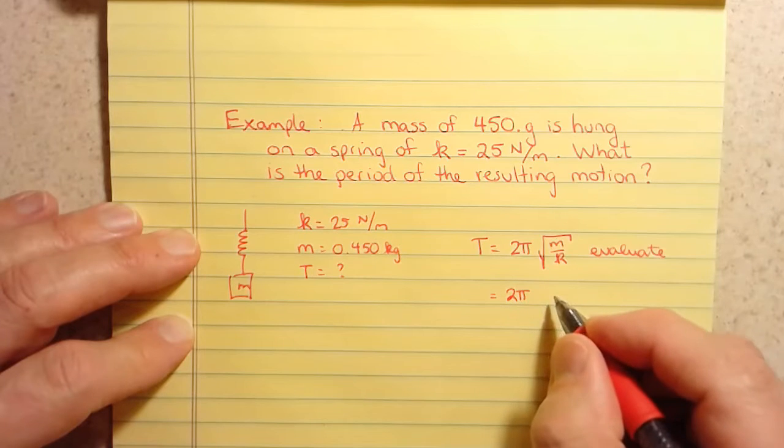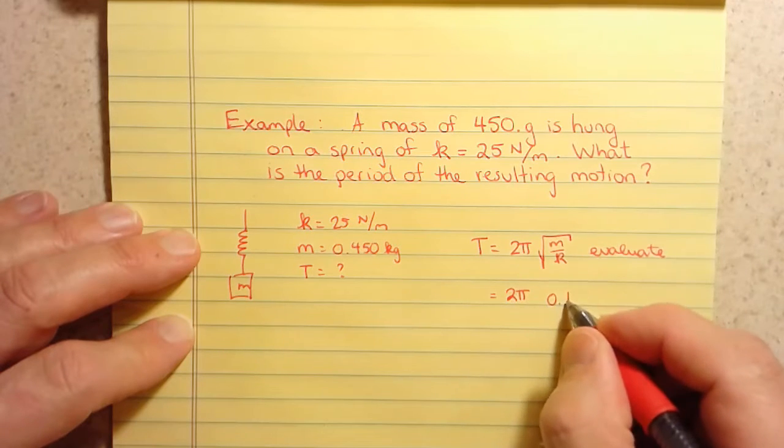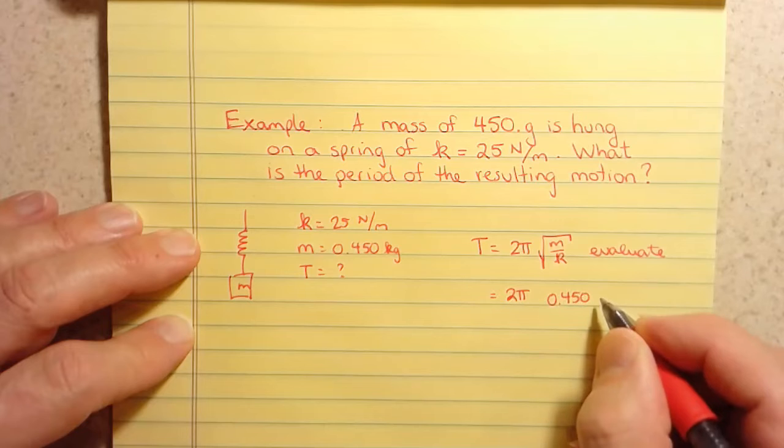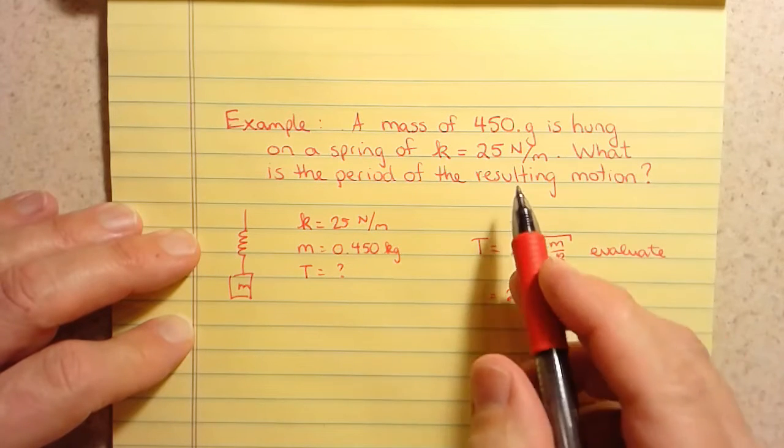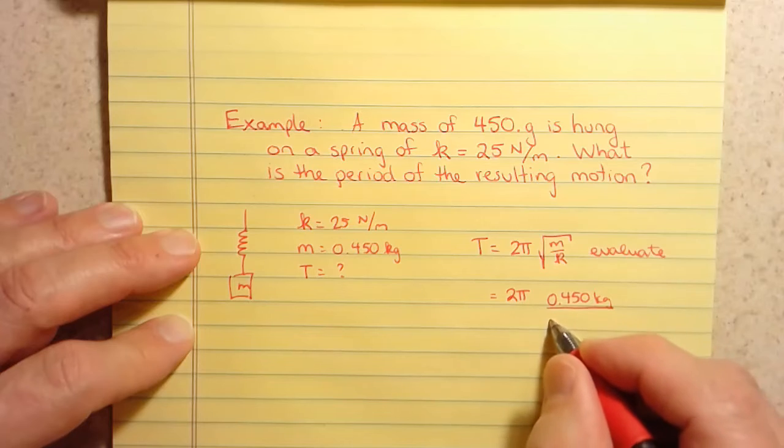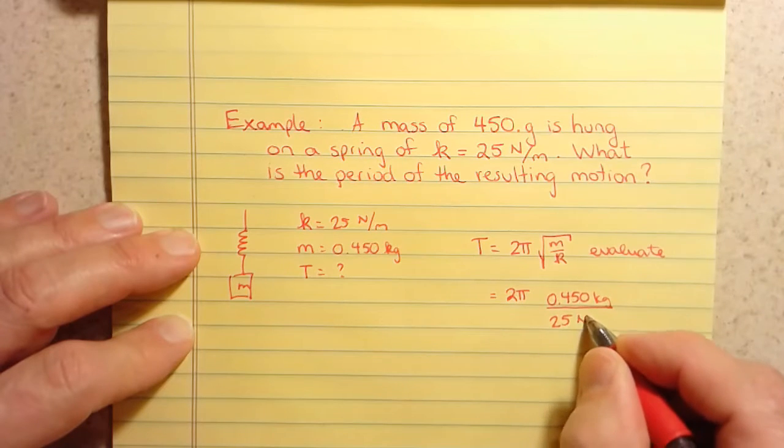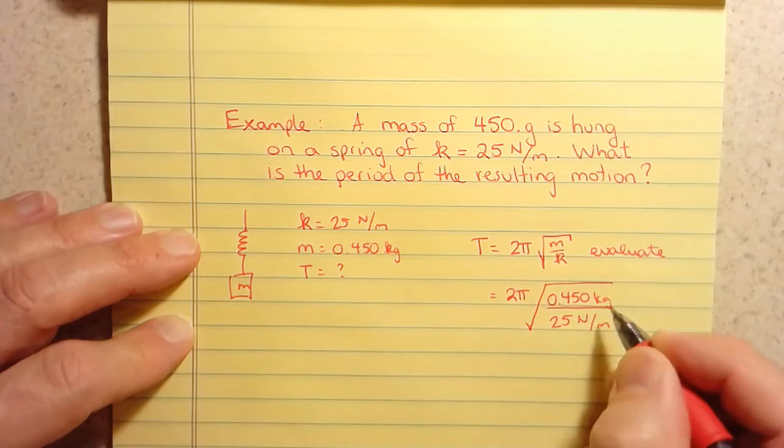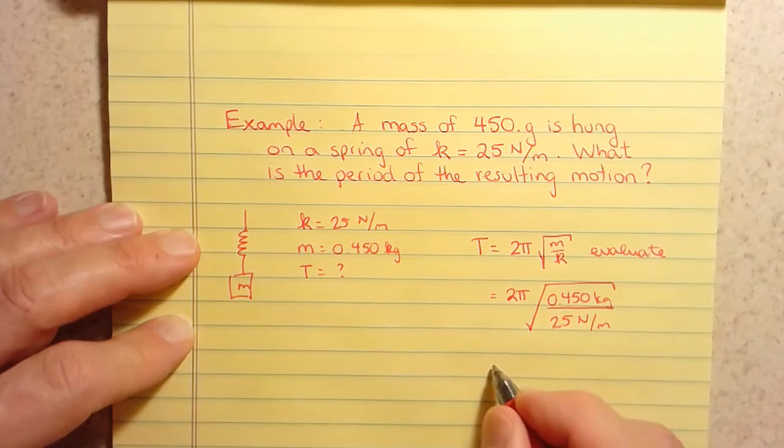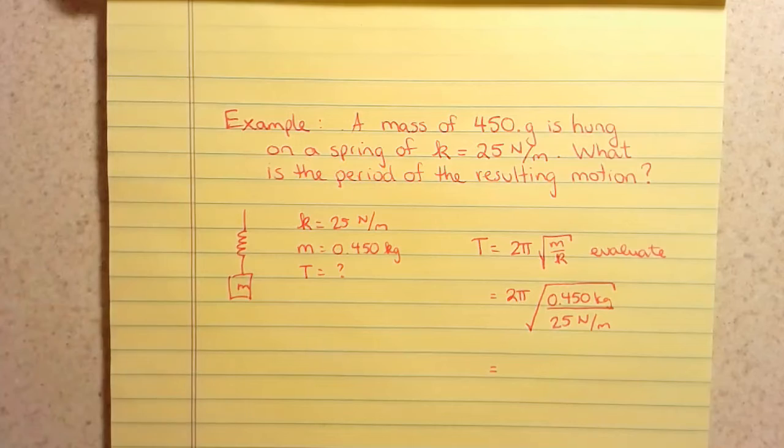We're going to have the mass, which is 0.450 kilograms, divided by the spring constant, which is 25 newtons per meter. And of course, all of this is inside the square root. So then you can grab your handy-dandy calculator there and compute that answer.